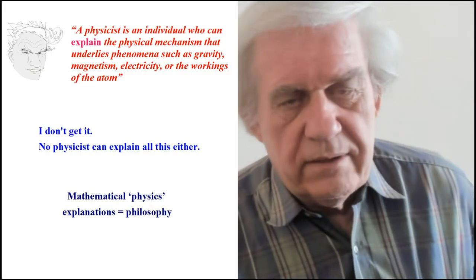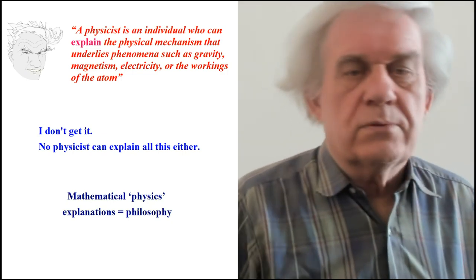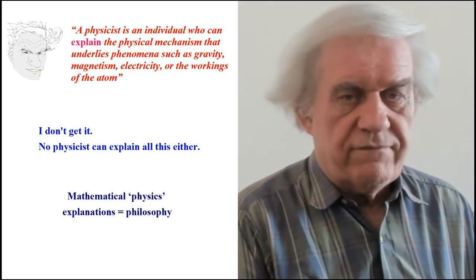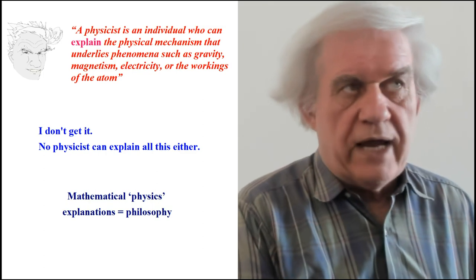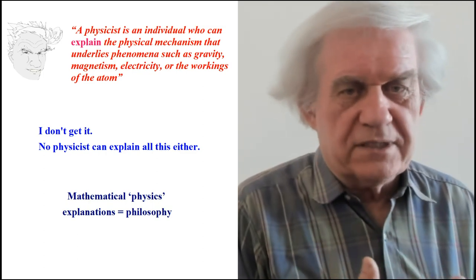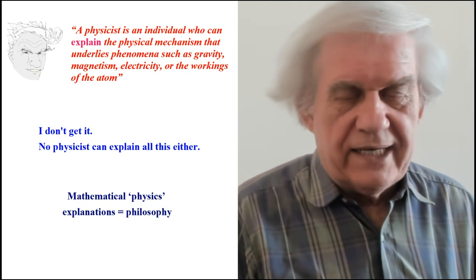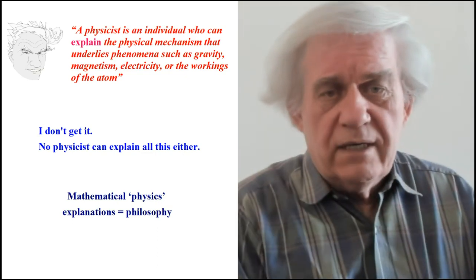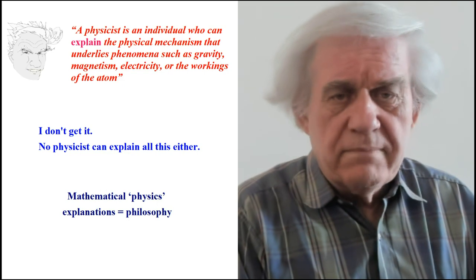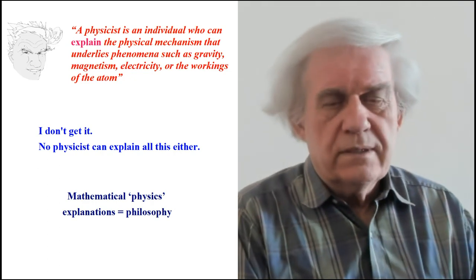And so one fellow asked the question, he said, in relation to what I had said, I said, a physicist is an individual who can explain the physical mechanism that underlies phenomena such as gravity, magnetism, electricity, or the workings of the atom. So that's what a physicist is. A physicist is someone who can explain a mechanism. You have to explain how the universe works, how Mother Nature does things, how Mother Nature does gravity, how it does magnetism, electricity, and so on. That's what you have to explain as a physicist. But to say that the magnet picks up iron filings, and the spoon always falls to the floor during gravity, and so you haven't explained anything. All you did was observe, measure, and say, I was able to measure how fast or how much it weighed or whatever, how much time it took. That doesn't make you a scientist. You're not using your brain when you do that. All you're doing is measuring and making a little equation that represents your measurement. That's not a scientist.